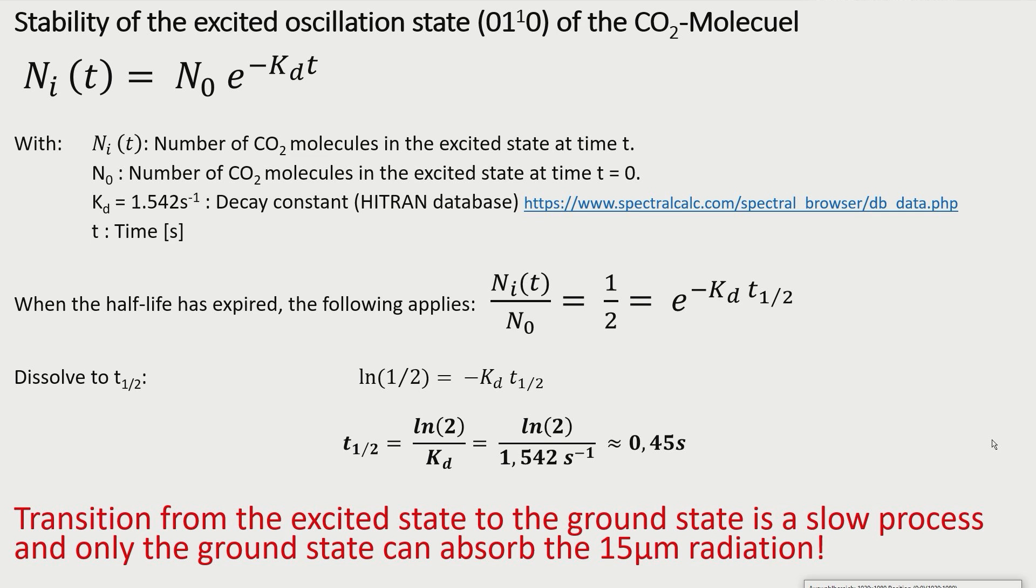Only if you observe a large number of excited states, you will recognize irregularity in the decay rate of the excited states. The decay law can be formulated for the excited states. With the decay constant from the HITRAN database, the half lifetime of the excited state can be calculated, to be about half a second.